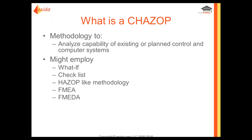A CHAZOP is a methodology to analyze the capability of an existing or planned control system — or control and computer system. The focus is on the control system and all the devices and elements within it. There are multiple techniques you can use: a what-if technique, checklists, a HazOp-like methodology we'll call a control HazOp, FMEA, and in some cases FMEDA would be appropriate.